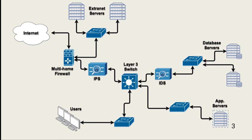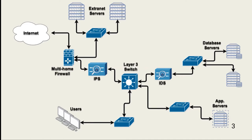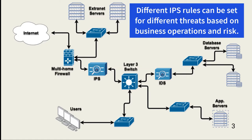An IDS does not usually block threats, but it can be configured to create a temporary firewall to block suspicious traffic. As its name implies, it only detects and alerts. An IPS, however, can block threat traffic or only send alerts. How an IPS responds to a threat depends on how it is configured. Each threat type, or threat category, can have its own configuration, with one threat resulting in only an alert and another resulting in traffic blocking.